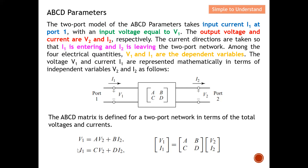Similarly, I1 is also known as a dependent variable, while V2 and I2 are known as independent variables. So basically, this is what these equations describe.